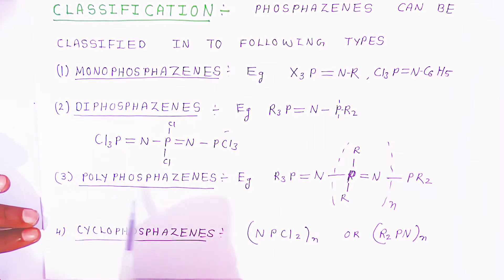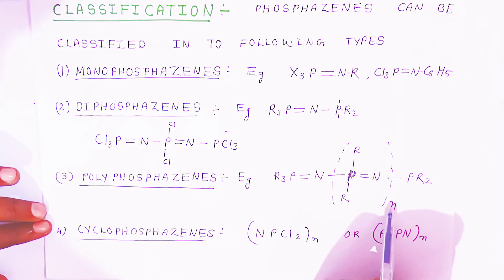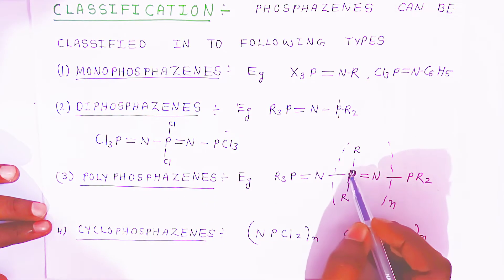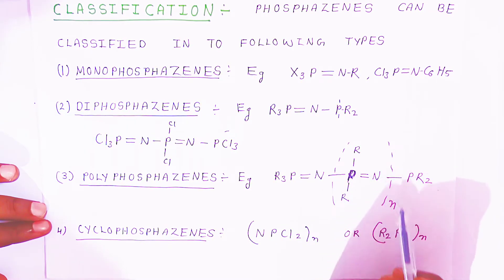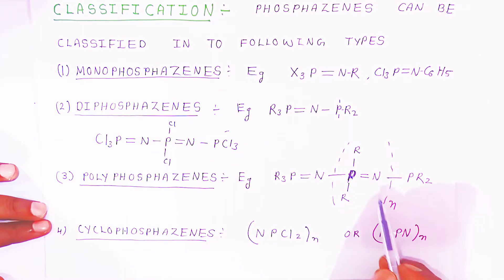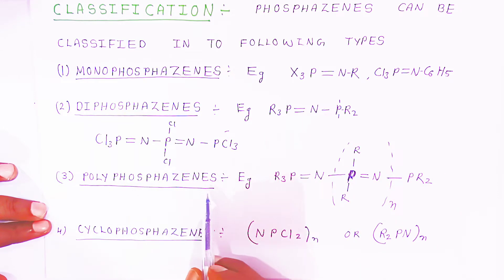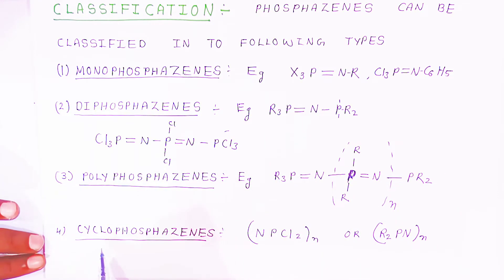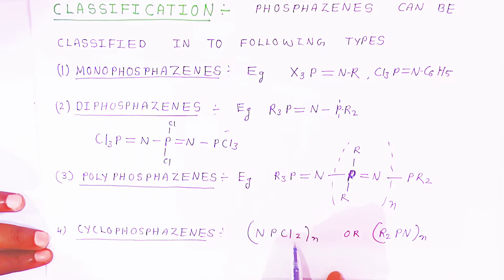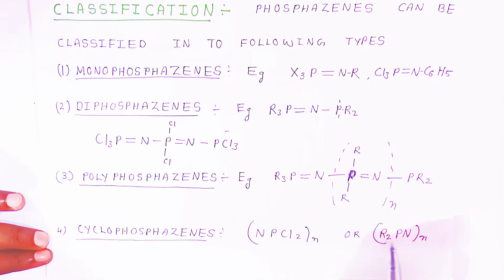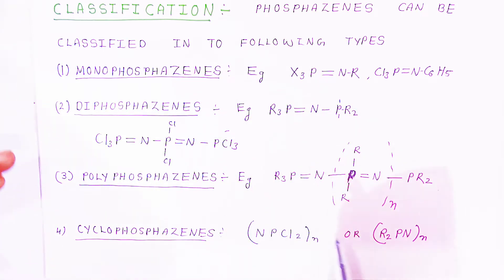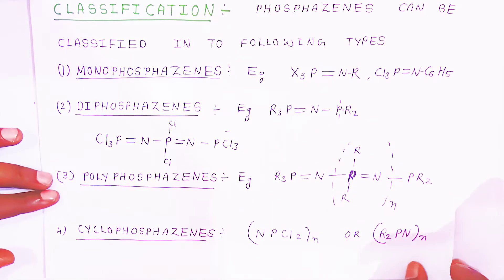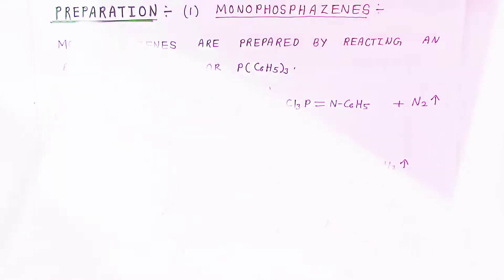When talking about Polyphosphazenes, the Phosphorus-Nitrogen unit repeats n number of times, so (PN)n is called Polyphosphazenes. For Cyclophosphazenes, nitrogen, phosphorus and dichloride units (NPCl2) are present in a cyclic form with n repeating units, represented as (R2PN)n. This is how we classify Phosphazenes.